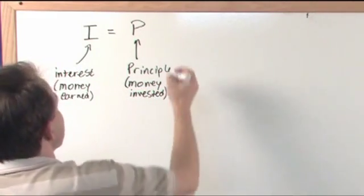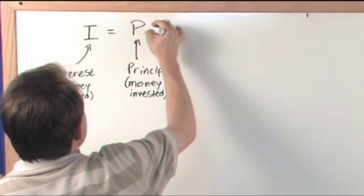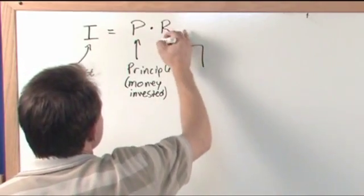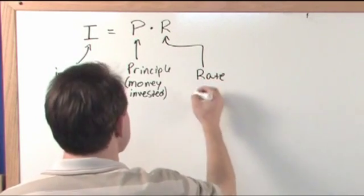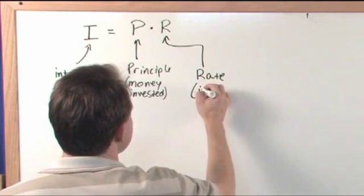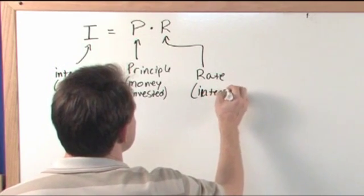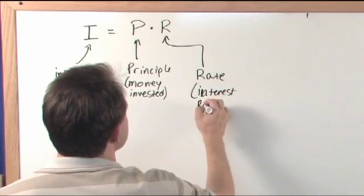So it's the principal times something called R, which is - you all know that somehow the interest rate has to be involved. And we'll just call it the interest rate.